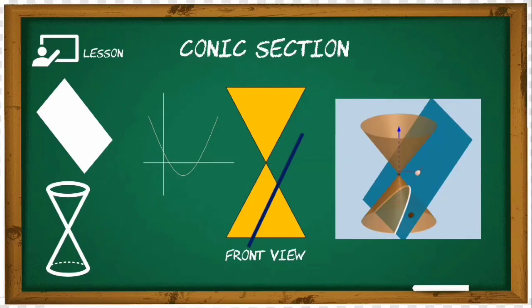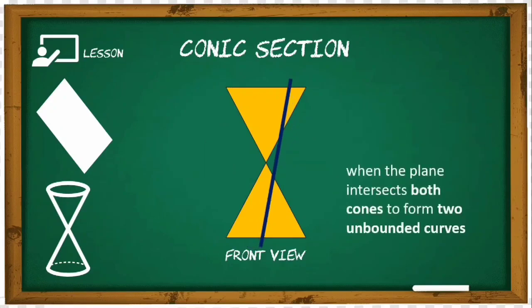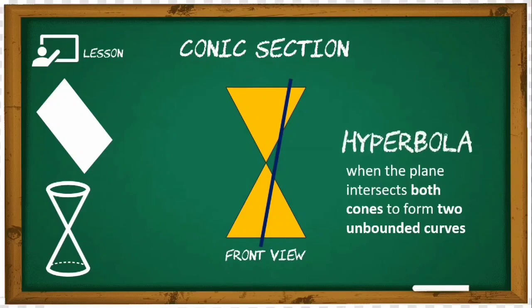This is what we call the parabola. Lastly, somehow similar to the parabola with unbounded curves, but this time we have two unbounded curves. When the plane intersects both cones to form two unbounded curves, this is what we call the hyperbola — it's like having two parabolas. The difference is that the plane intersects both the upper and lower parts of the double cone.